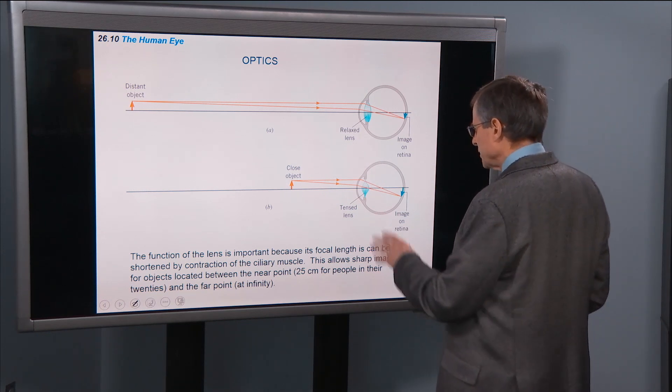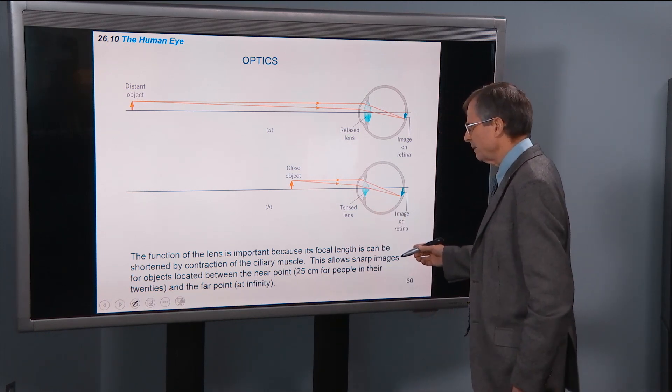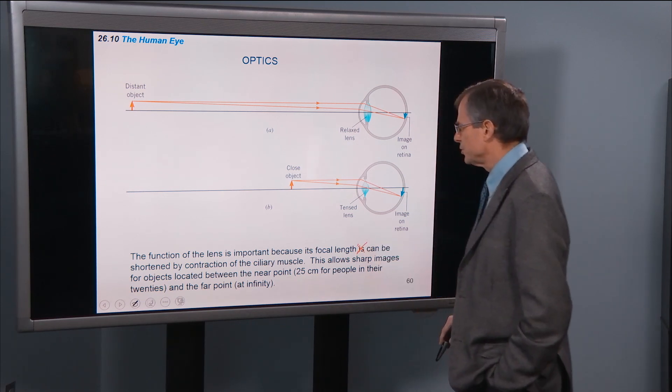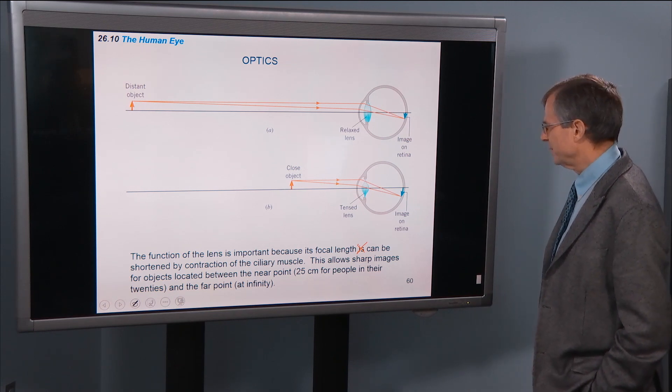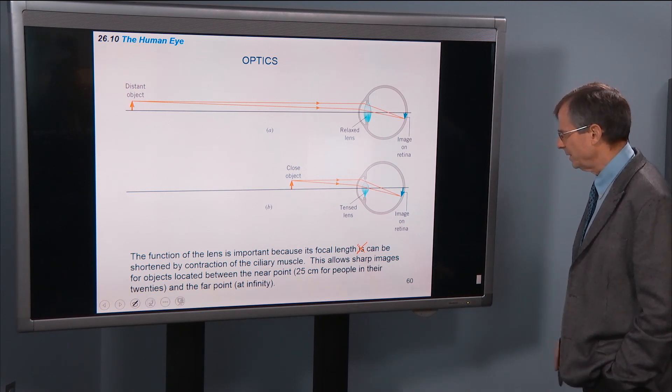So the function of the lens is important because its focal length can be shortened by contraction of the ciliary muscle. This allows sharp images for objects located between the near point,